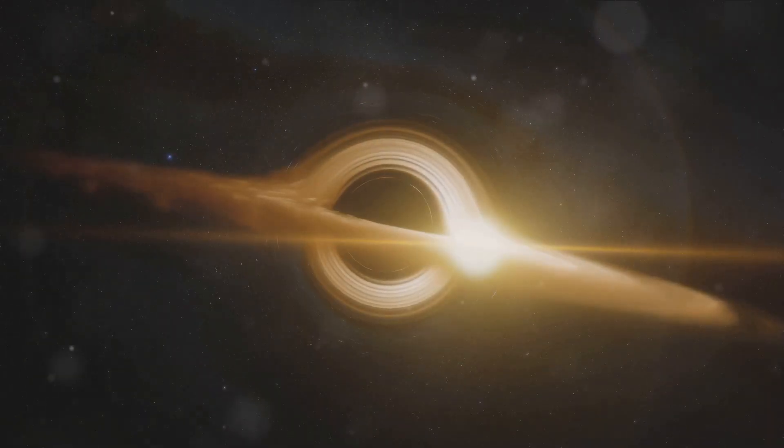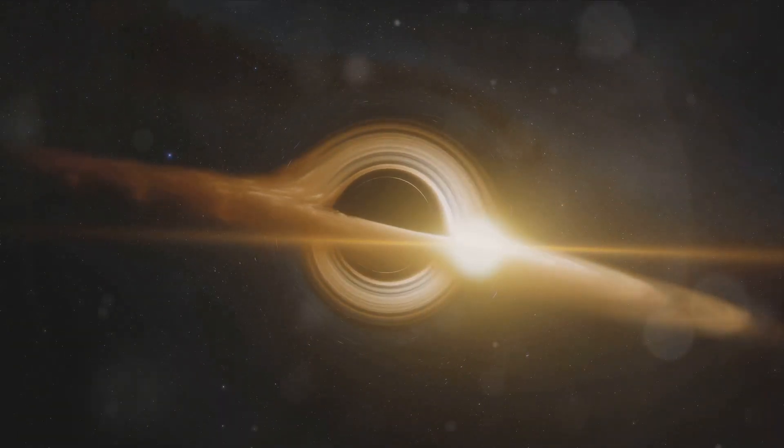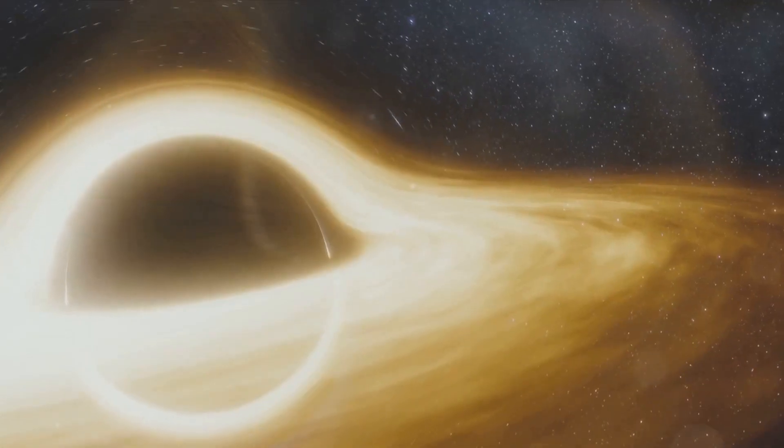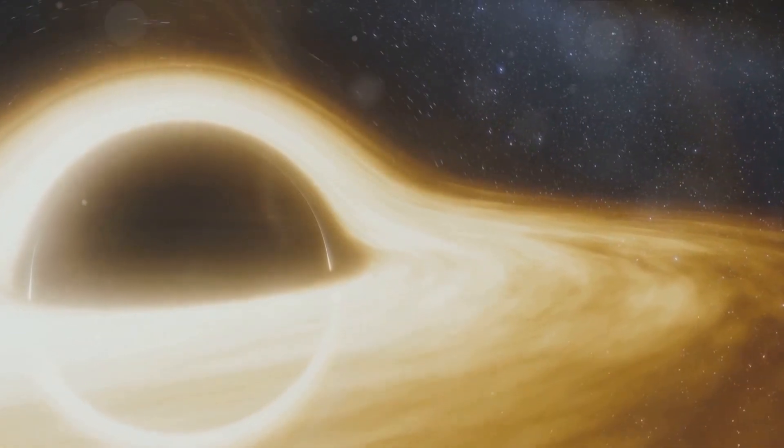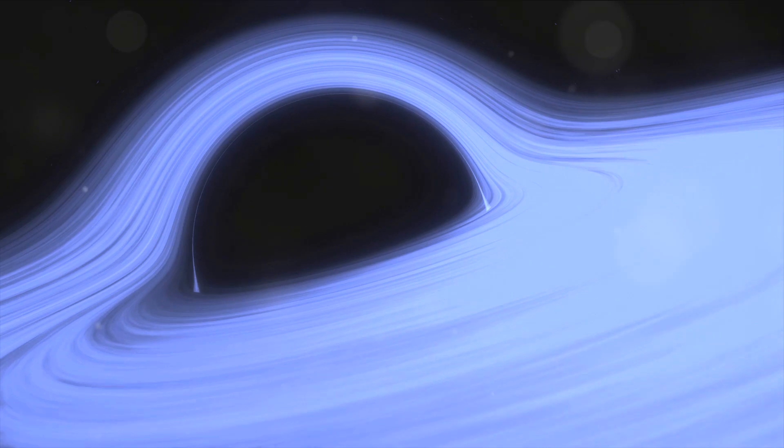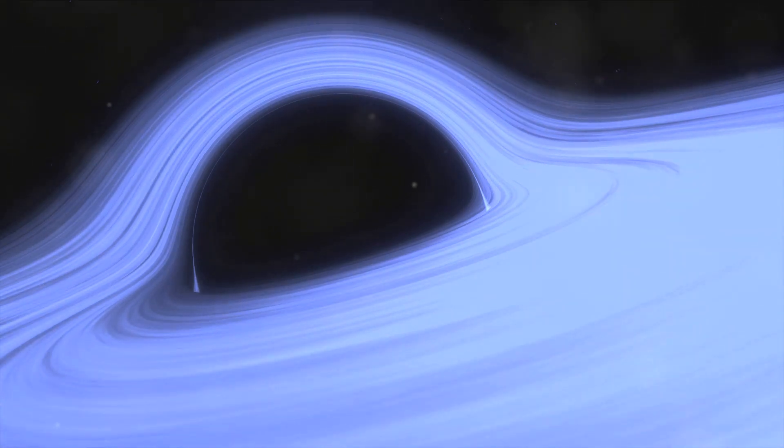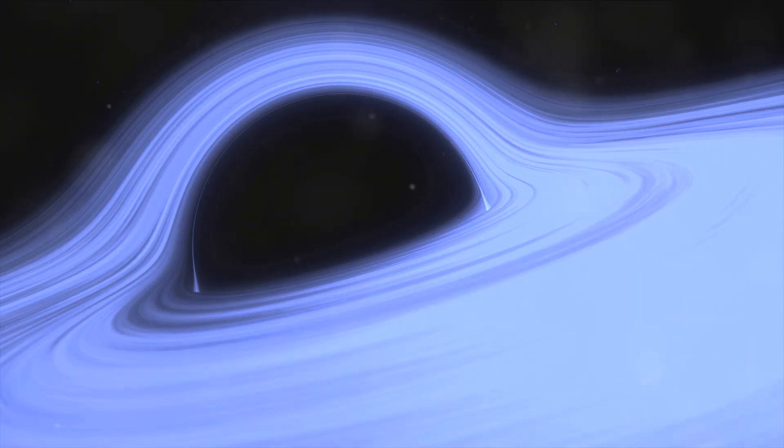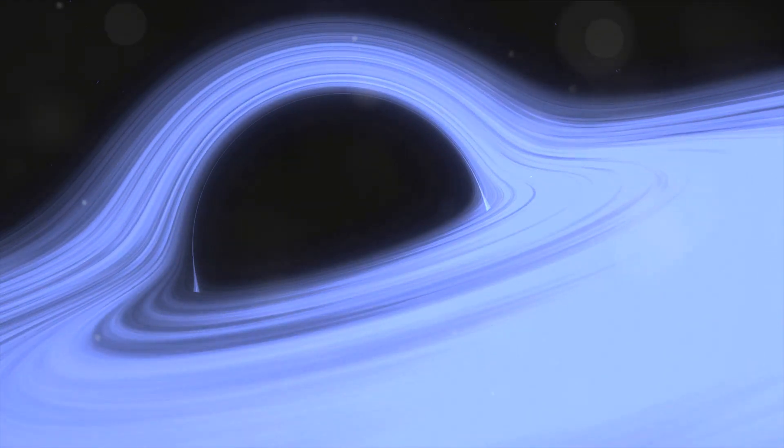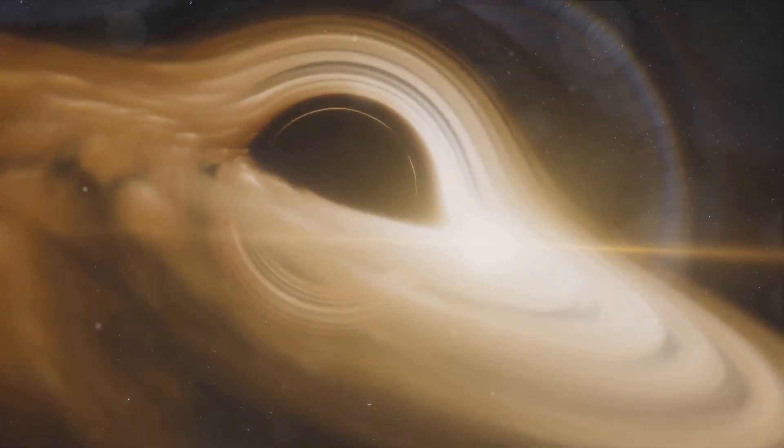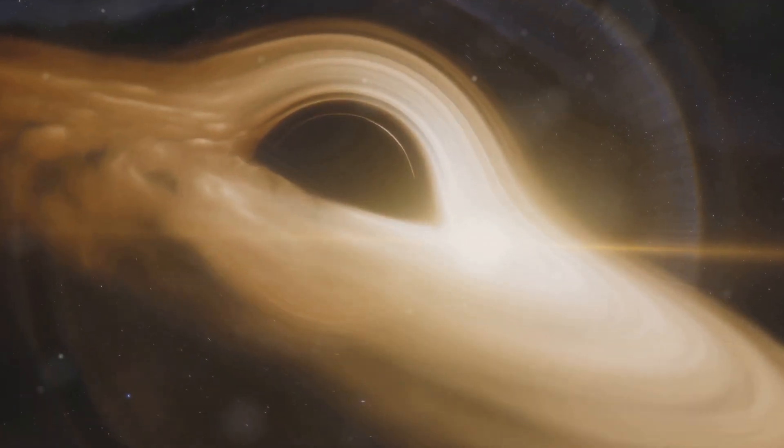But black holes aren't just theoretical constructs of physics. They are real observable phenomena. Astronomers detect them through their influence on nearby matter. For instance, if a black hole passes through a cloud of interstellar matter, it will draw matter inward in a process known as accretion. This accretion disk heats up and emits x-rays, which telescopes can detect.